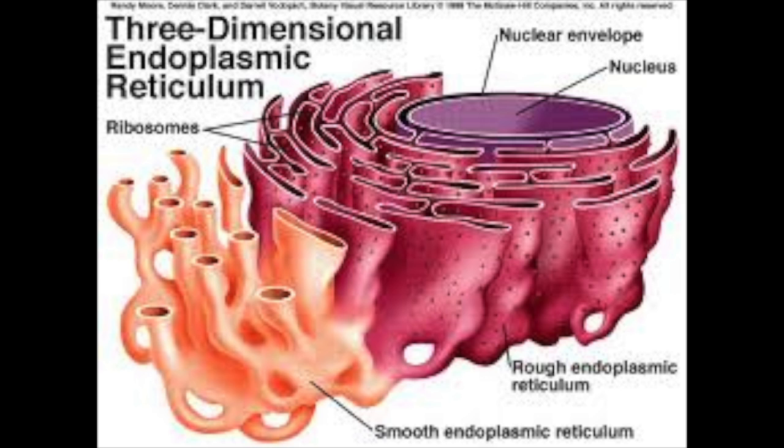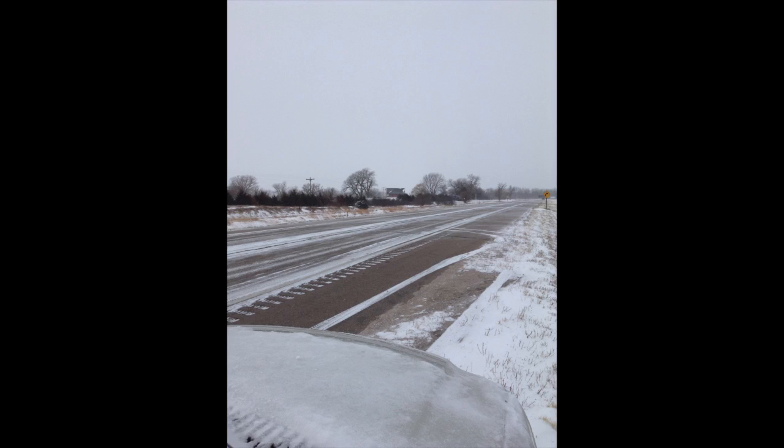Endoplasmic reticulum is a cytoplasmic organelle that moves materials around in a cell. It is made up of a complex series of folded membranes and it can be rough or smooth. We are comparing it to the roads because the roads help us move around town.